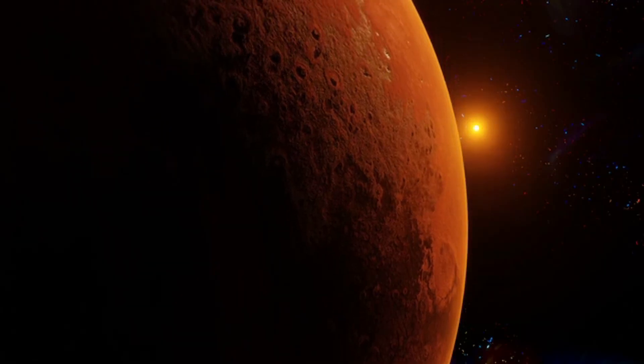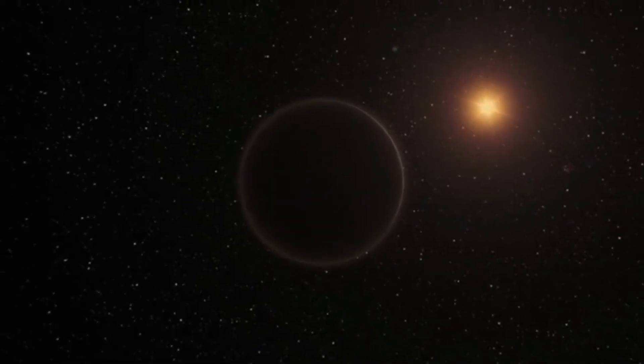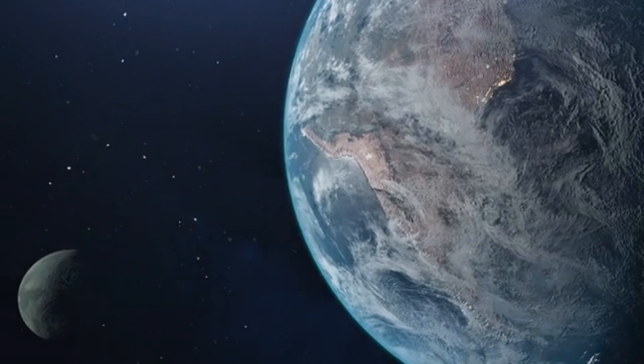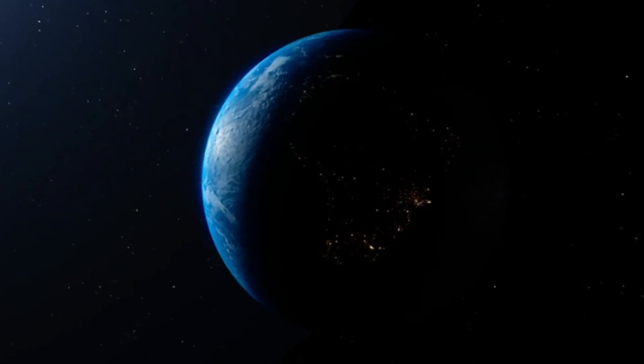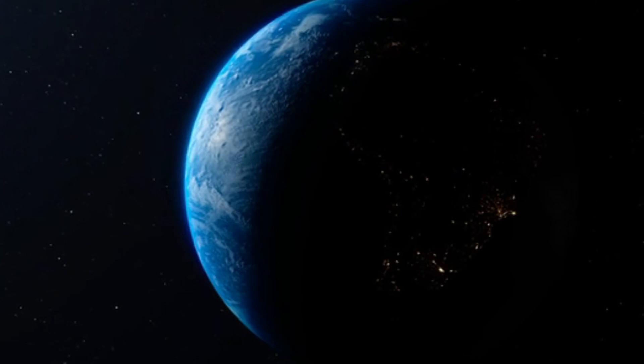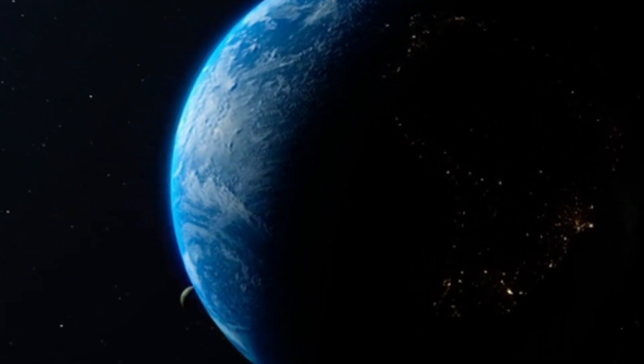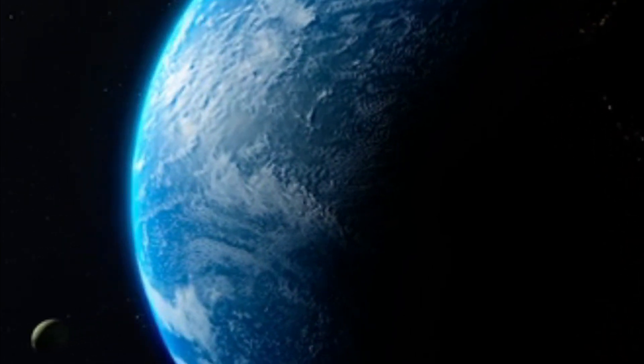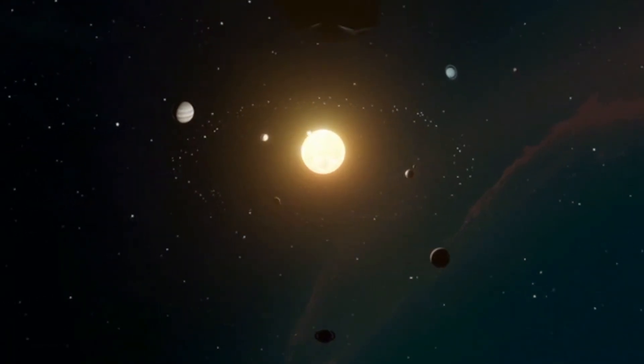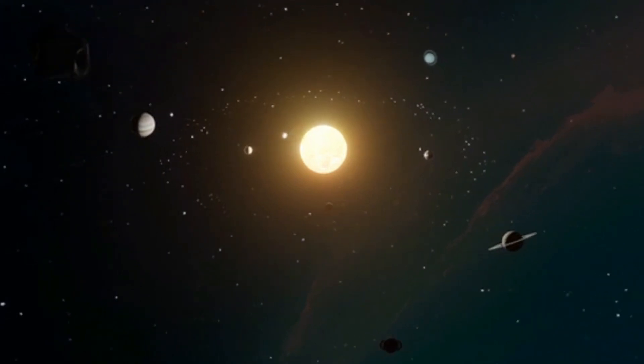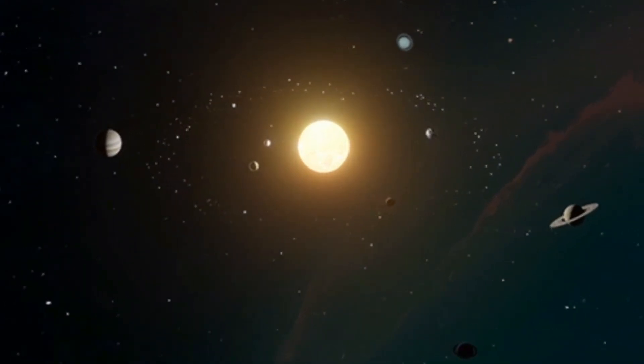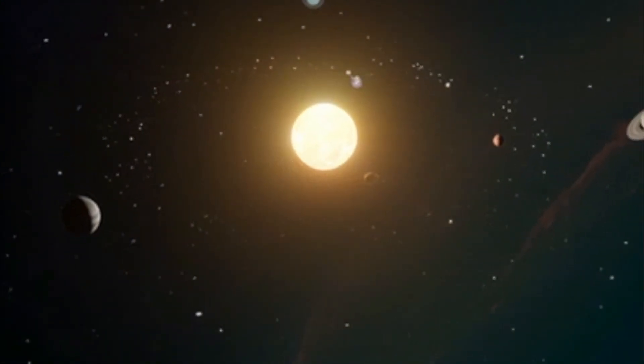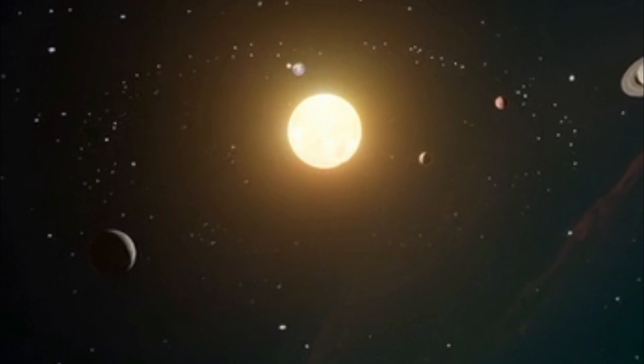While exoplanets like Proxima Centauri b, Kepler-186f, Kepler-22b, and LHS-1140b offer exciting possibilities for finding habitable worlds, they each face a range of significant challenges. Atmospheric stability, climate variability, geological activity, and the risk of biological contamination all play crucial roles in determining their true potential to support life. As our exploration of these distant worlds continues, overcoming these challenges will be essential for advancing our understanding of the cosmos.